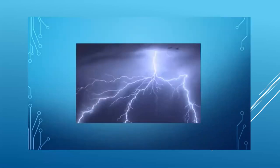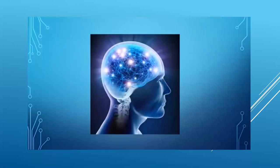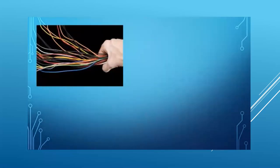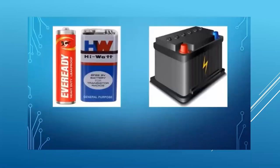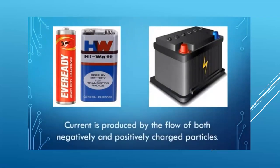A large current flows when lightning takes place from a cloud to the ground. A sensation is felt by us due to a microscopically small current flowing to the brain. We are aware of the current flowing through wires, electric bulbs, and equipment in the house. In an electric cell for a radio or in a car battery, a current is produced by the flow of both positive and negatively charged particles.